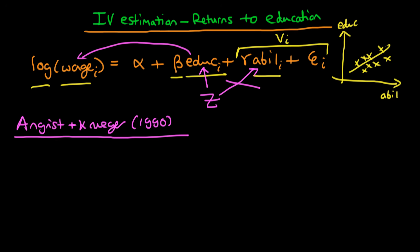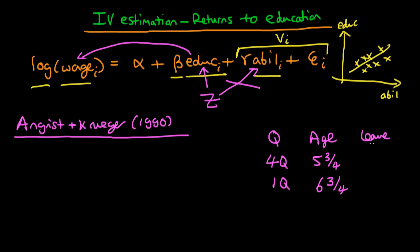The instrument they chose was the quarter in which an individual was born. They looked at those people born in the fourth quarter and those born in the first quarter of the year. This affected the age at which an individual tended to enter school: those born in the fourth quarter tended to enter school at around age five and three quarters, whereas those born in the first quarter tended to enter school at age six and three quarters. Because there was a law stipulating a minimum age at which an individual could leave school — they had to wait until their 16th birthday — individuals born in the fourth quarter tended on average to spend longer in school than those born in the first quarter.